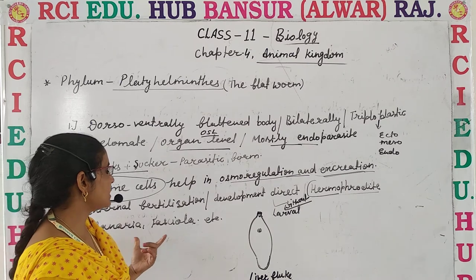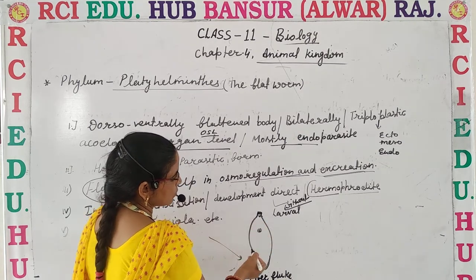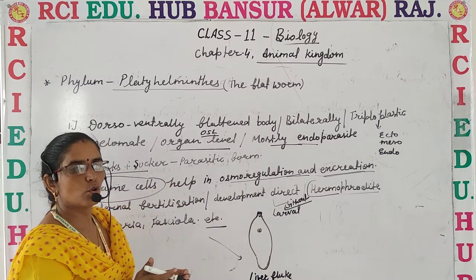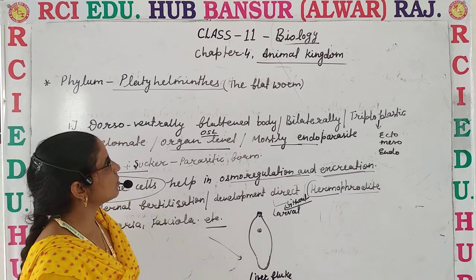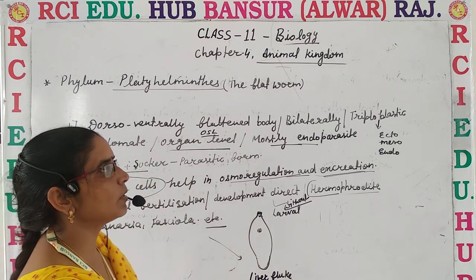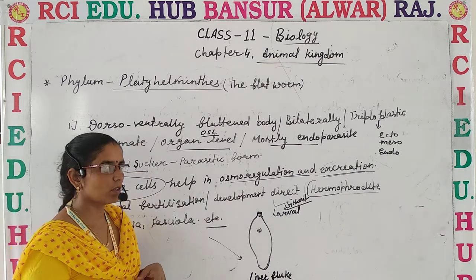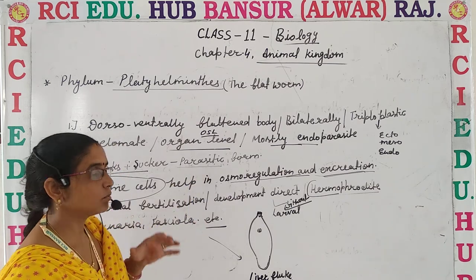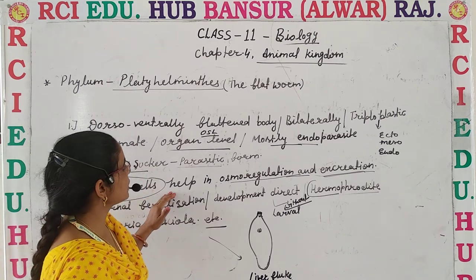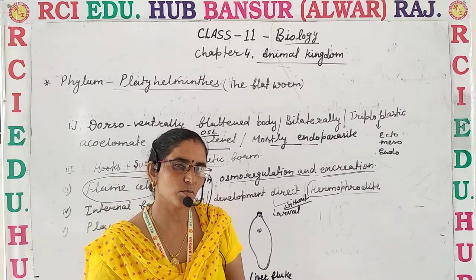Examples include Planaria and Fasciola — the example of liver fluke is given here. The structure shown is a flatworm because the body is dorsoventrally flattened. Key features: mostly endoparasitic but some are ectoparasitic; hooks and suckers for parasitic nutrition; and flame cells which help in osmoregulation and excretion. Please like, comment, share, and subscribe. Thank you.